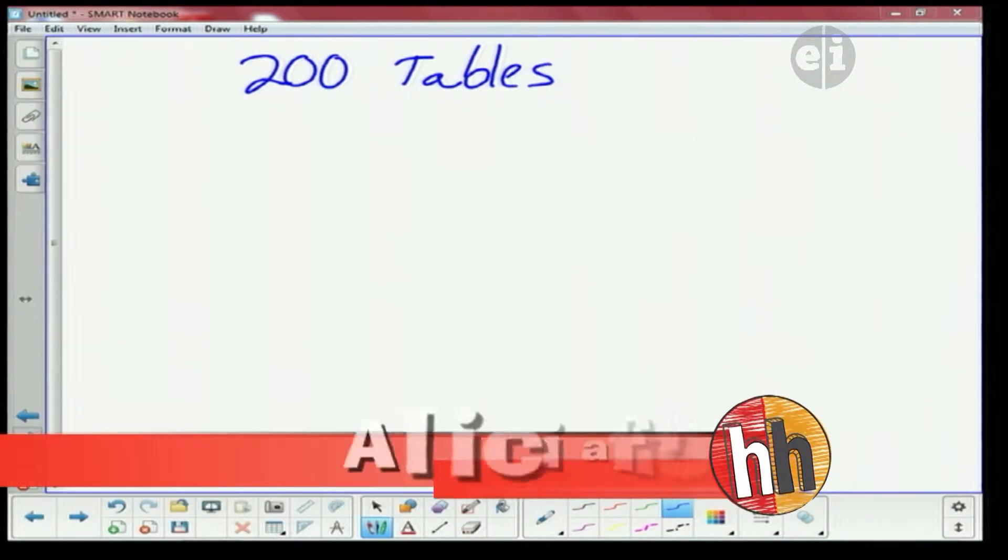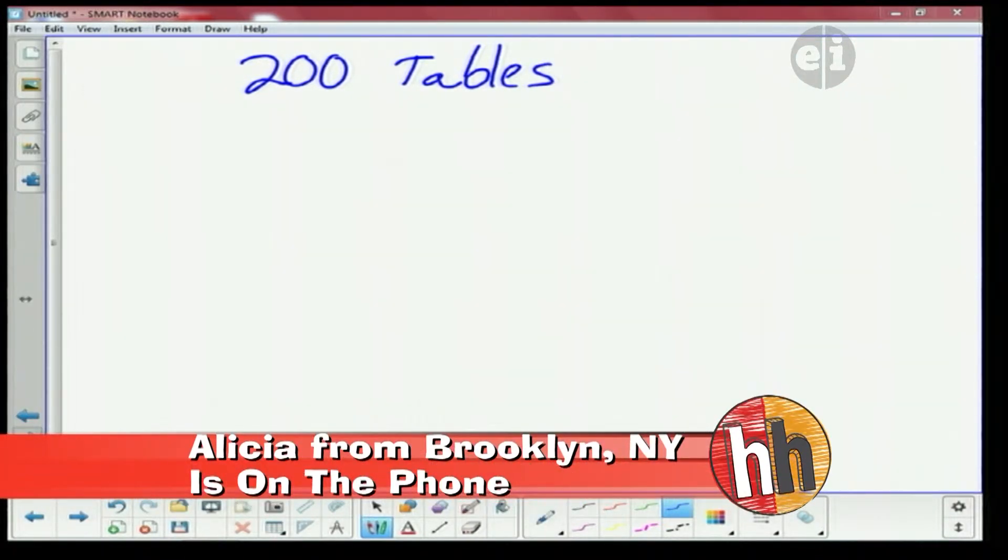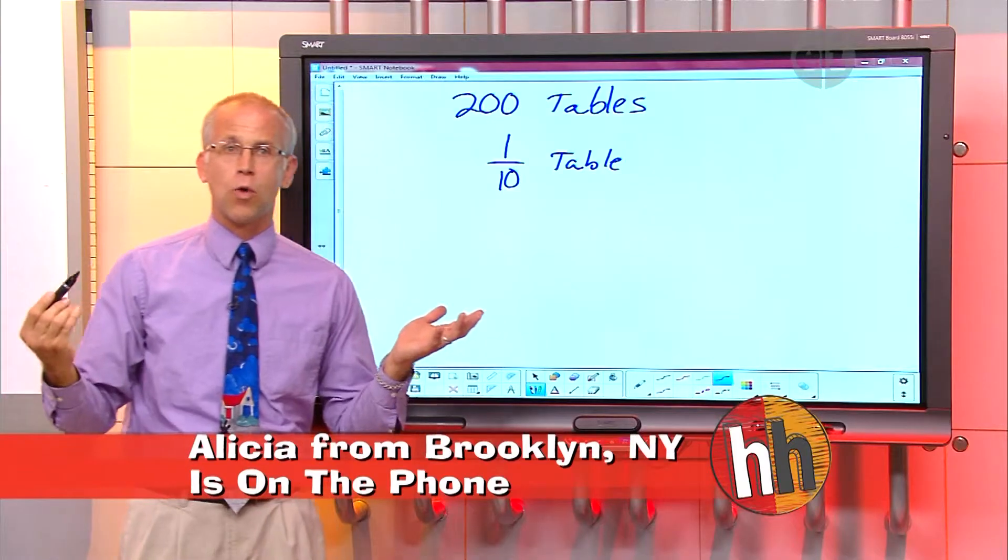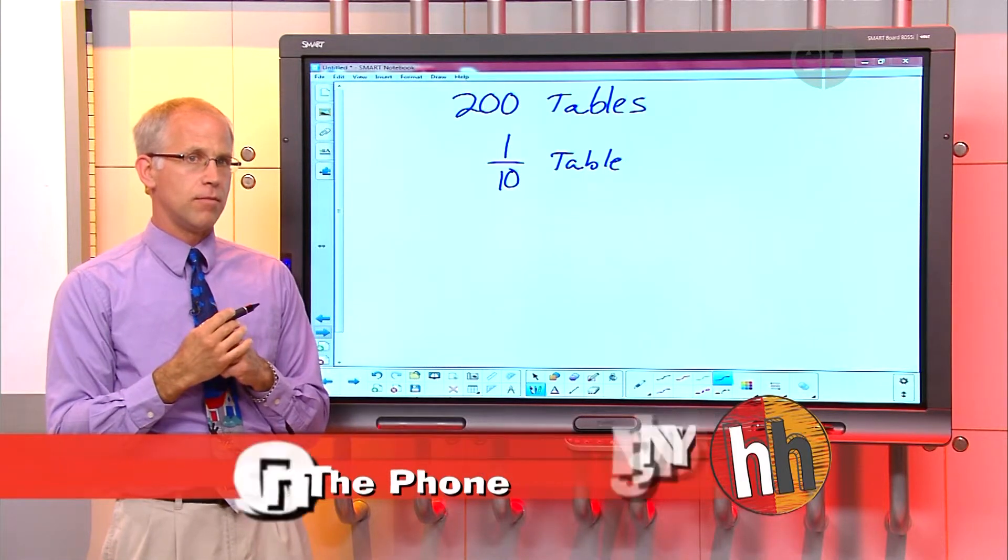Um, there are reservations for one-tenth of the tables. So we have one-tenth of the tables. Okay. We have reservations for one-tenth. Yes. And what do you think we have to do now? We have to figure out what one-tenth of that whole thing is, right? Yes.